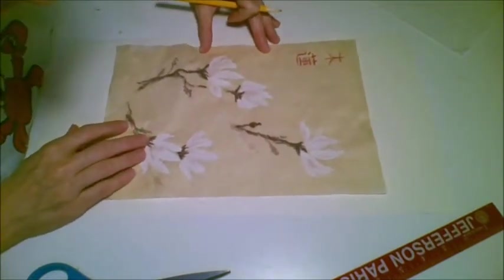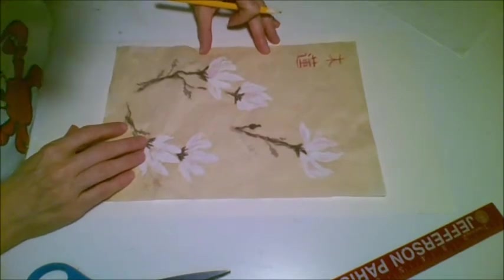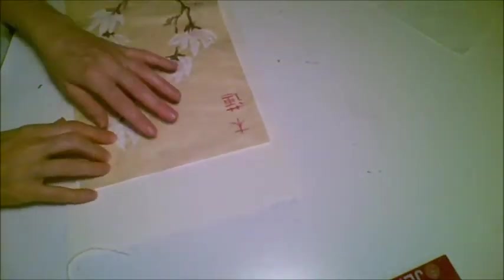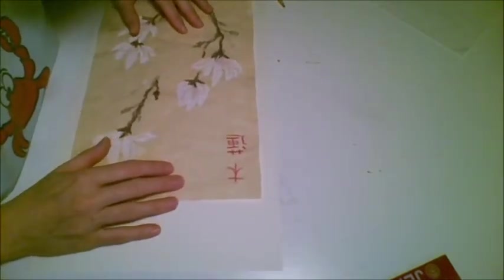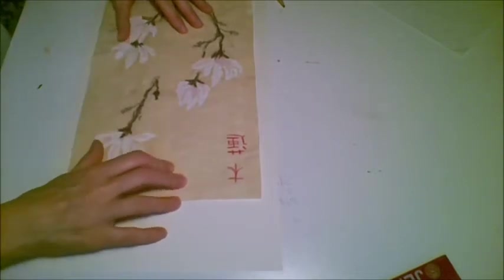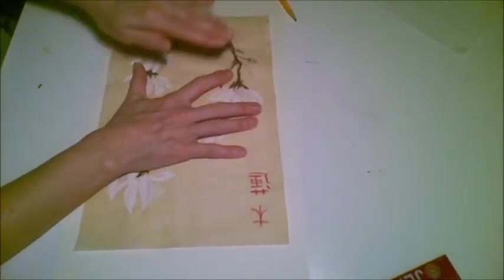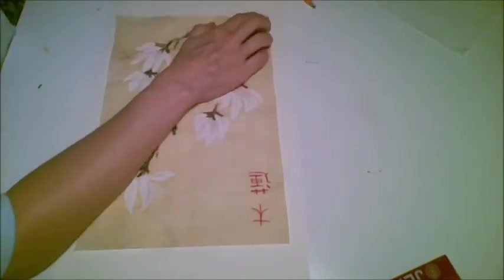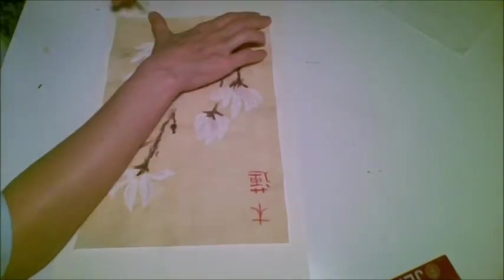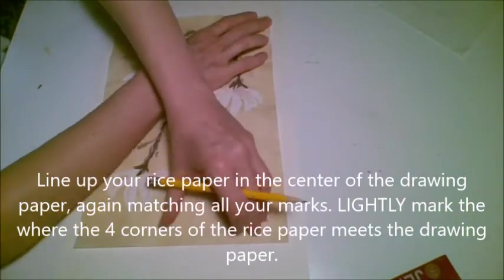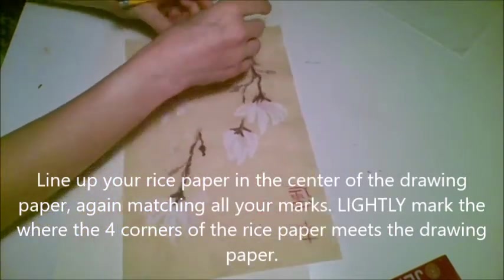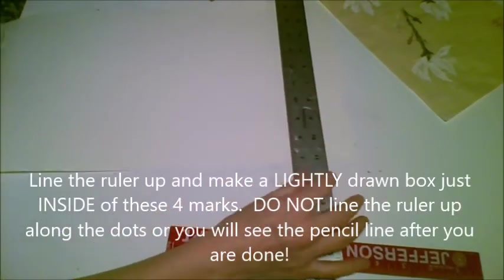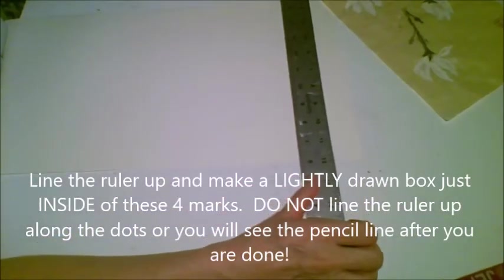Now I've got to get lined up again now that I've moved my dots. All right, excellent. Okay. So we have to make a general box around here. So I'm going to very faintly put a tiny little mark at all four of these corners. Again, very lightly. I mean, as light as you possibly can.